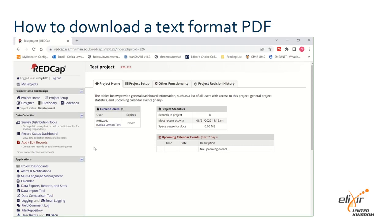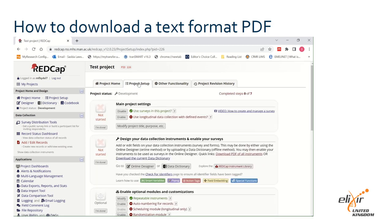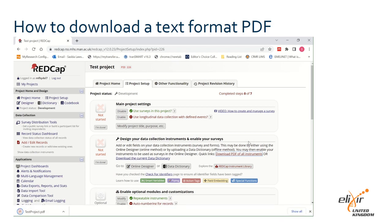To download a PDF in a searchable text format, go to your project homepage and then the project setup tab. In the design your data collection instrument and enable your surveys box, click download PDF of all instruments. A PDF will now download via your browser, which you can then open and save in the desired folder.